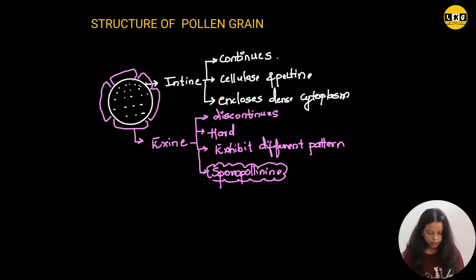So now, here in some of the region, you can see there is absence of sporopollenin. This region where there is no sporopollenin or no exine present is known as germ pore. What is the function of germ pore? Germ pore give rise to pollen tube. The pollen tube emerges from the germ pore.